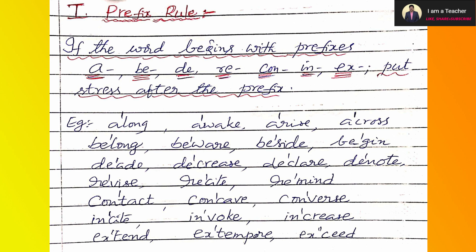More examples: beware, beside, begin — prefix 'be'; decide, decrease, declare, denote — prefix 'd'; revise, recite, remind — prefix 're'; contact, concave, converse — prefix 'con'; insight, invoke, increase — prefix 'in'; extend, exceed — prefix 'ex'. Whatever the prefix is, we leave the prefix and immediately on the next letter we draw a vertical line. That is the first rule.